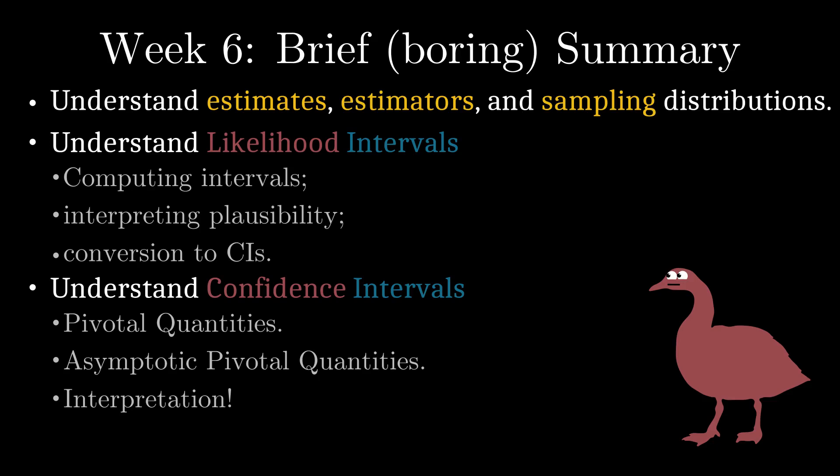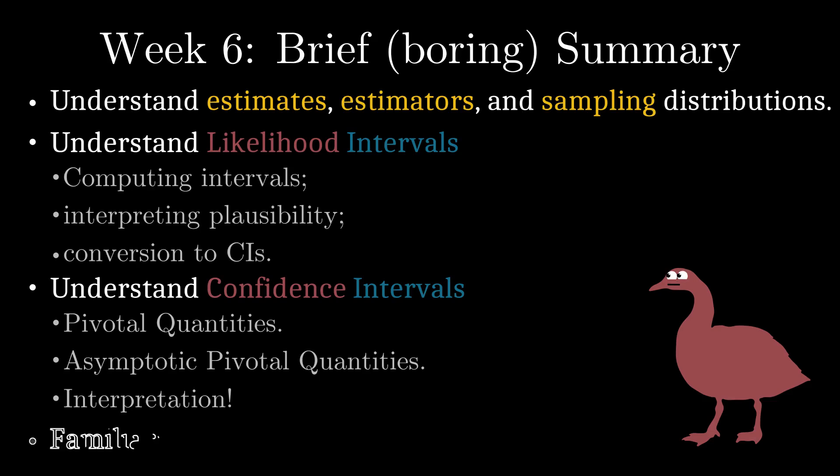We introduced both the chi-squared and the T distributions. You should feel comfortable working with either of these distributions, and they should be added to your list of common distributions for this course alongside those previously seen. The focus of this section is on the quantification of uncertainty through the use of interval estimators — an incredibly widespread and important technique in statistics and in research more broadly. In the next parts of this tutorial, we will try to explore more deeply what confidence intervals mean and, perhaps more importantly, what they do not mean.